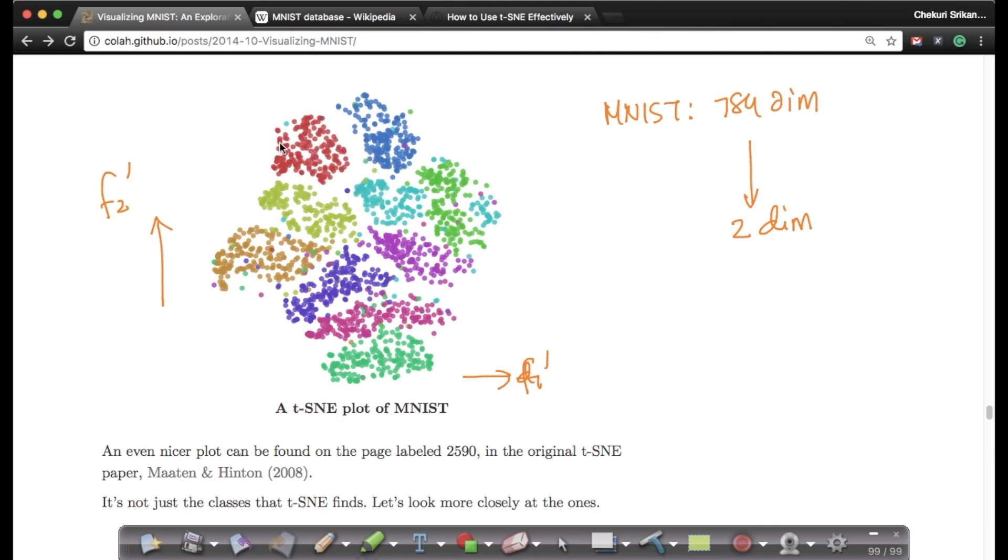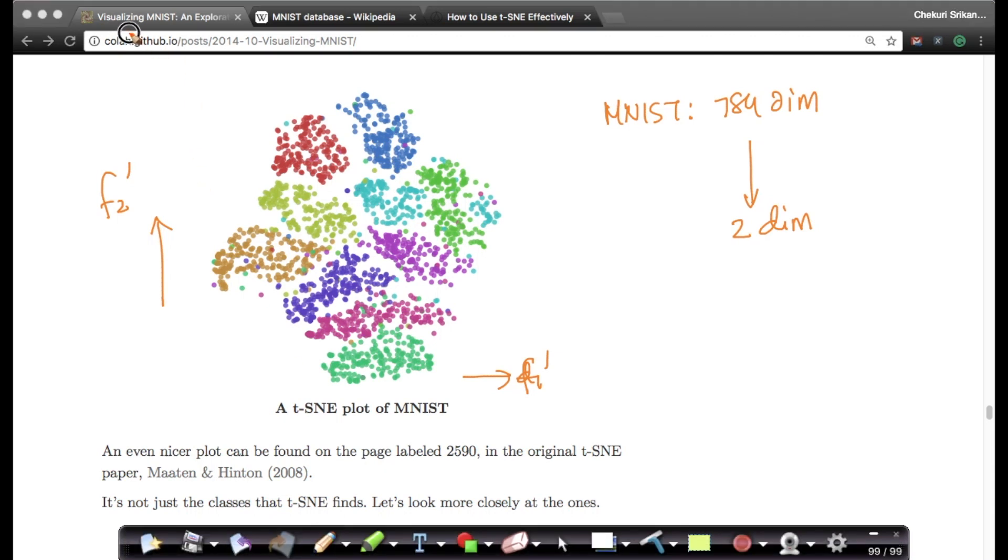One thing you'll notice is all your zeros are here, and these are your sixes. All your sixes are here. All your ones are here. All your twos are here. As I move my mouse I can quickly see this, and by the way I forgot to mention this is on Christopher Ola's blog.